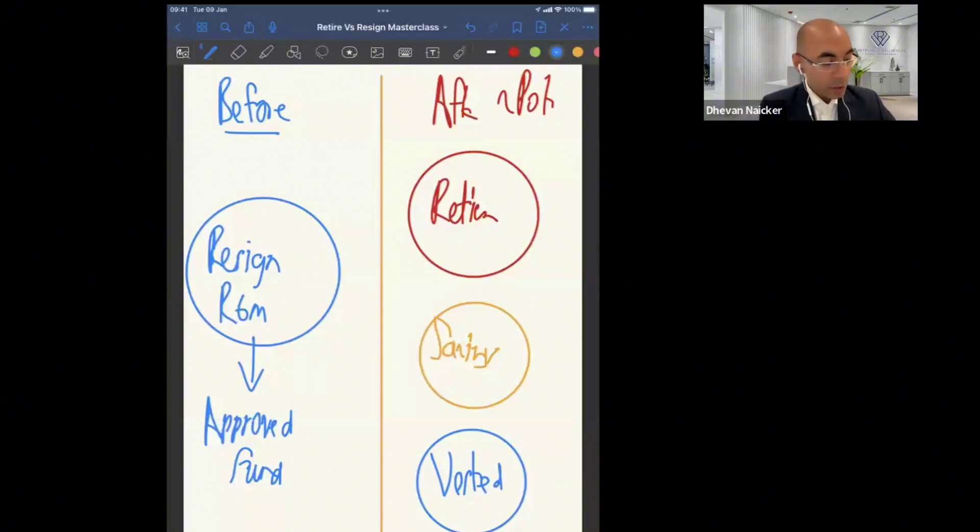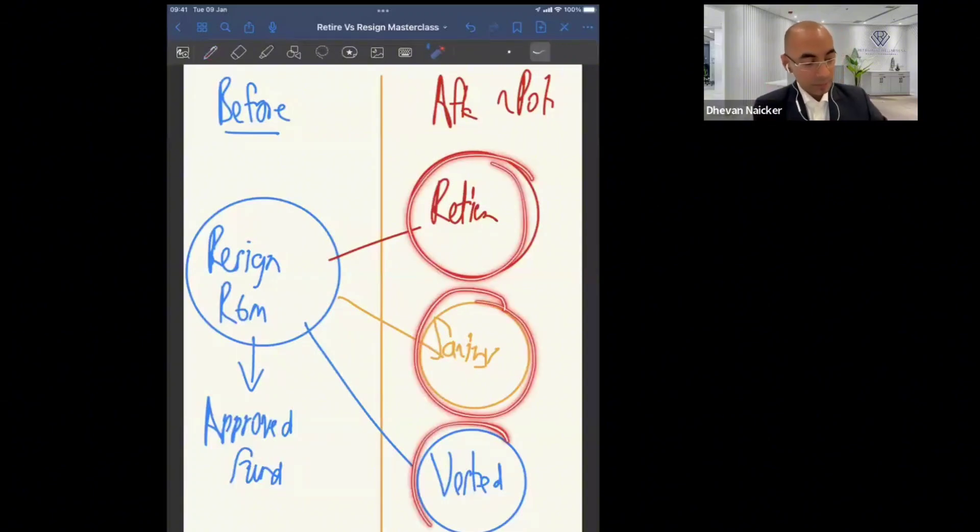Now, what are the basics that you want to understand here? So let's first draw this so we can understand the picture clearly. In essence, although it's termed a two-part system, if you have a look at it closely, there are actually three parts that are going to be created now. One being the retirement, second being the savings, and the third being the vested part.